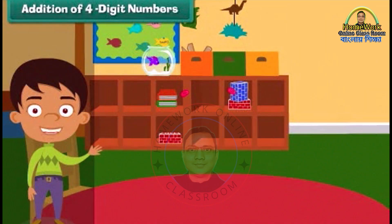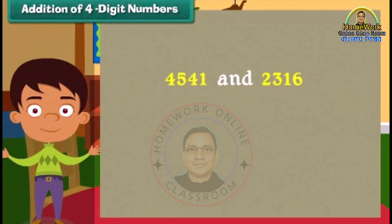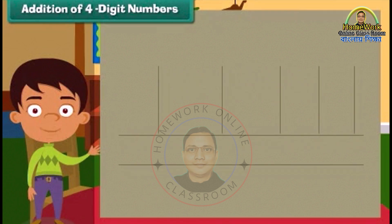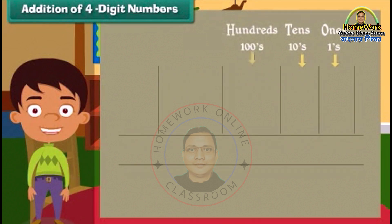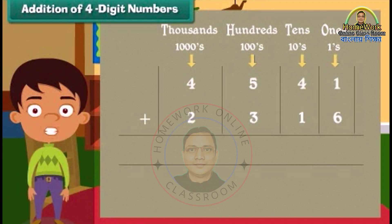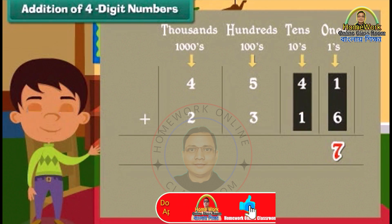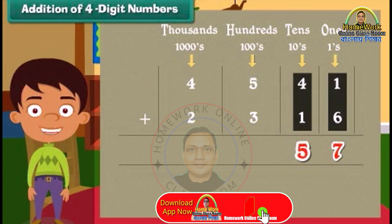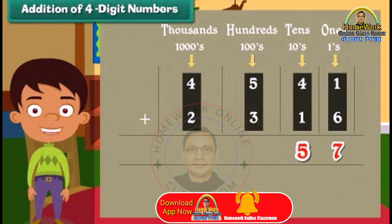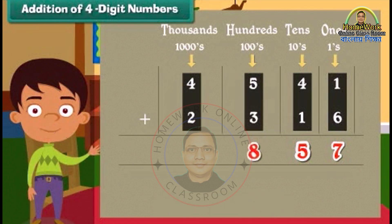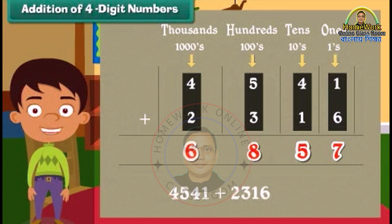Addition of four-digit numbers. The first problem that Ben picks to solve is to add 4541 and 2316. Start solving by writing the numbers in the columns. Remember that we begin adding from ones — the addition is 7. Now we move to add the tens: 4 plus 1 is equal to 5. Similarly, we add the numbers under hundreds and thousands. The numbers we get are 8 and 6 respectively. So 4541 and 2316 when added is equal to 6857.